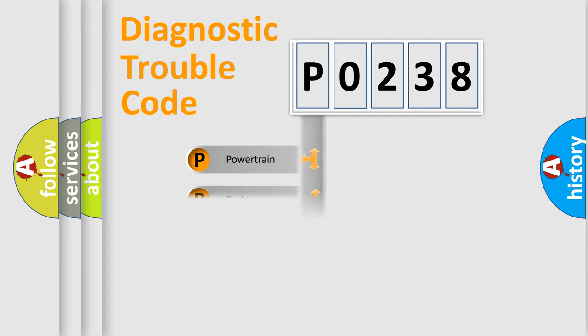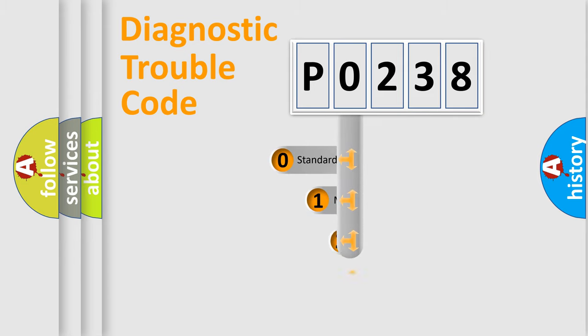Powertrain, body, chassis, network. This distribution is defined in the first character code.